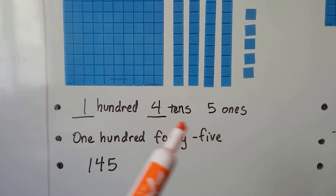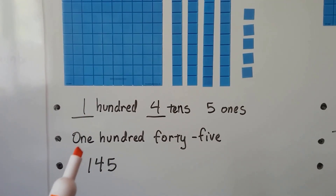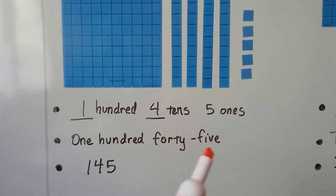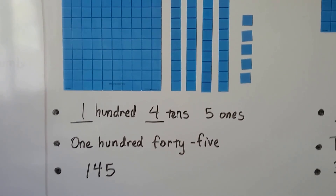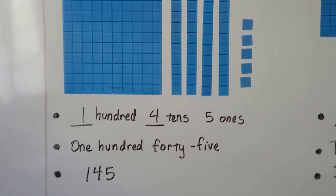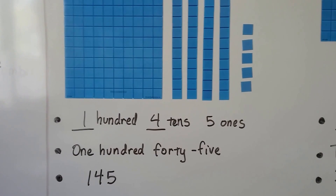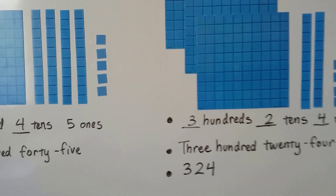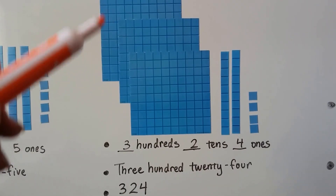We can show it with models, we can write the words — one hundred forty-five — and notice the 45 has a hyphen in it. We can write it as the numeral: a one in the hundreds place, a four in the tens place, and a five in the ones place.